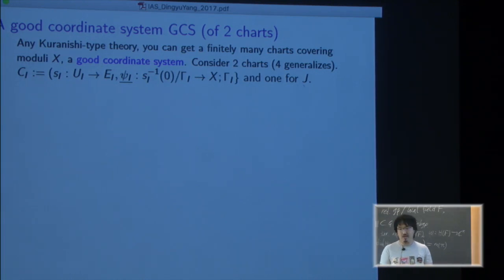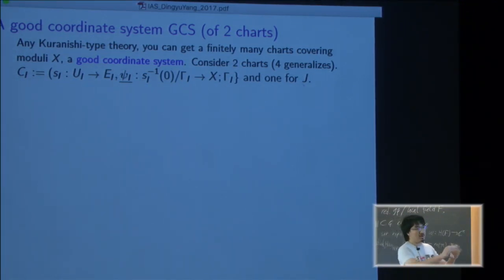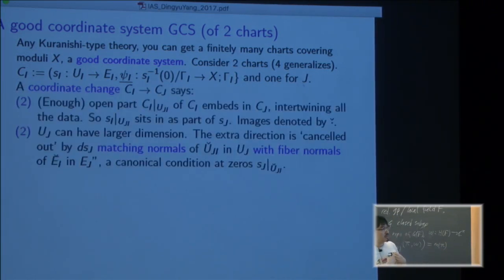So you have local charts covering the space - there are finitely many, let's just consider two. Usually if you can work out for two you know how to generalize in general. So locally Ci is one chart, it has a section in the bundle Ei, you have a topological identification of the quotient of the group action of the zero set to an open set in X. Gamma is the group and you have a coordinate change - open portion of one chart embeds in another chart, everything intertwined. Let's denote the image by the check.